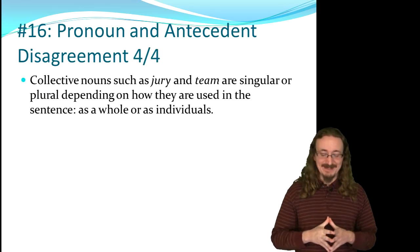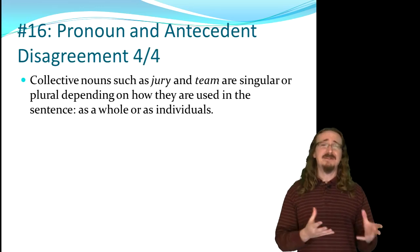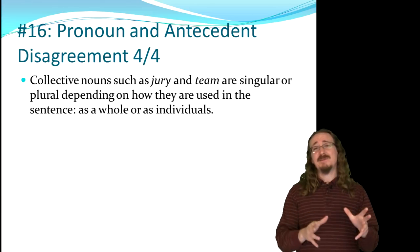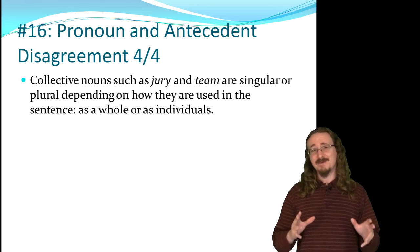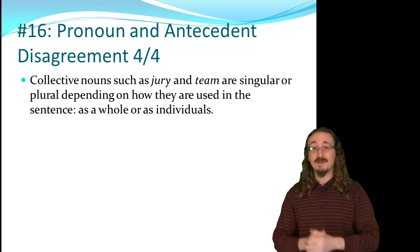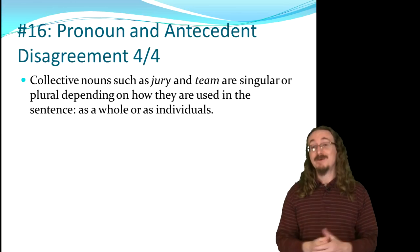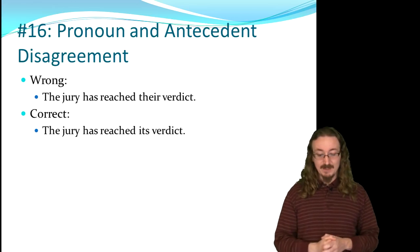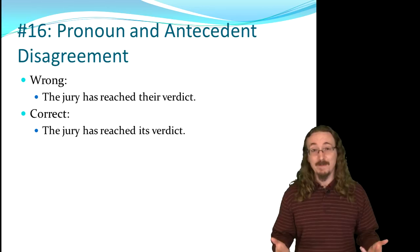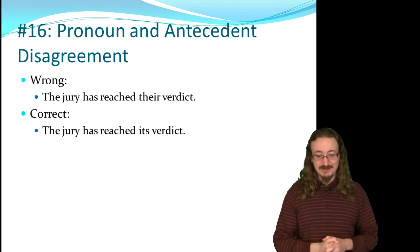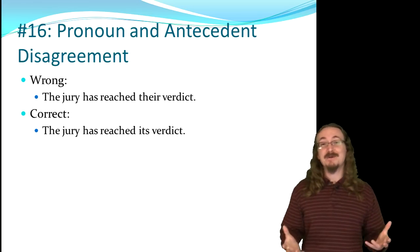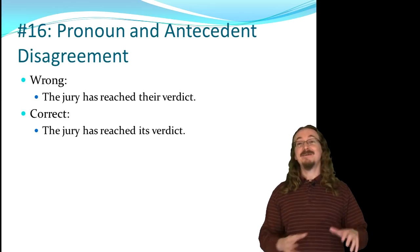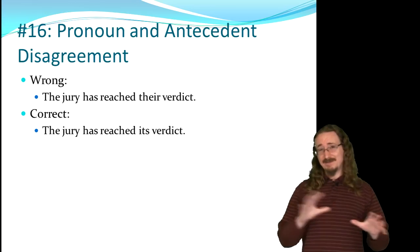The last rule here covers collective nouns — things like jury, team, or group. Whether to use singular or plural depends on whether the noun is acting as one unit or as individual members. 'The jury has reached its verdict' is correct because they worked together for one verdict. But you might say 'The jury are arguing among themselves about the case,' since arguing requires more than one person. Think about it logically.